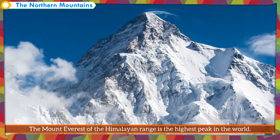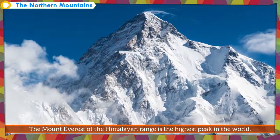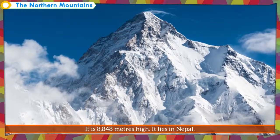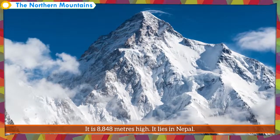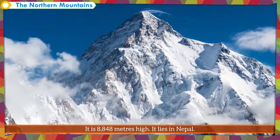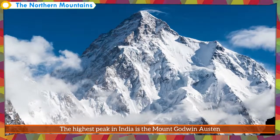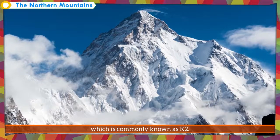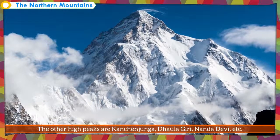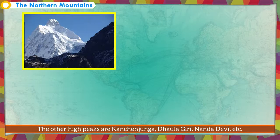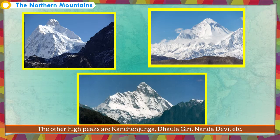The Mount Everest of the Himalayan range is the highest peak in the world. It is 8,848 meters high and lies in Nepal. The highest peak in India is Mount Godwin Austin, commonly known as K2. The other high peaks are Kanchanjangha, Dholagiri, Nanda Devi, etc.